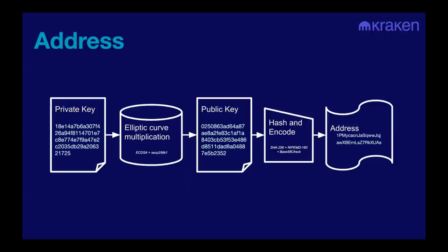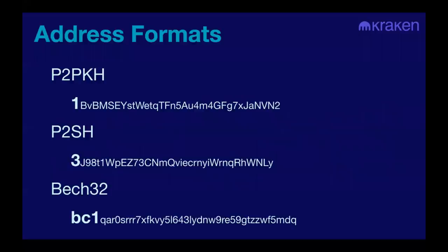When you want to send a payment, you ask the recipient to give you an address and you send the Bitcoin to that address. Conversely, to receive Bitcoin, you give someone your address. Here are some common address formats for Bitcoin. The oldest format starts with a 1 and is called P2PKH. Your wallet software handles this for you, but it's important to note that the BC1 addresses are actually better in many ways — you generally want to favor using the BC1 format, which is the newest.